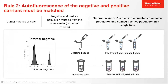Rule 2: autofluorescence of the negative and positive carriers must be matched. The carrier is the beads or cells. The negative and positive population must be from the same carrier. Mixing carriers is not recommended and can result in inaccurate compensation. When running compensation, an internal negative or universal negative can be used. An internal negative, shown on this slide, is a mix of an unstained negative population and a stained positive population, all in a single tube. The histogram displays how the compensation control will be observed when using an internal negative, showing a CD8-negative and a CD8-positive population.